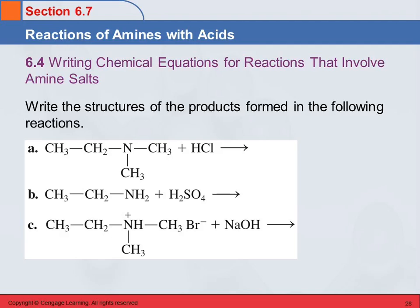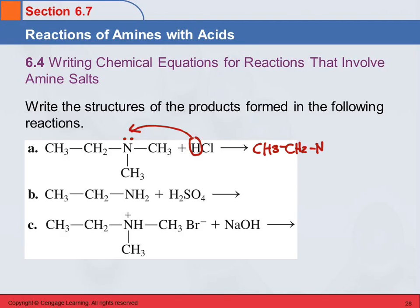Let's write equations for reactions involving amine salts. We have a tri-substituted tertiary amine reacting with hydrochloric acid. We don't generally show the lone pairs on nitrogen, but remember that they're there. The proton from the acid can bond to those lone pairs. So we end up with the ethyl group and two methyl groups on nitrogen, plus a hydrogen — giving a positively charged ammonium ion — and a chloride ion.